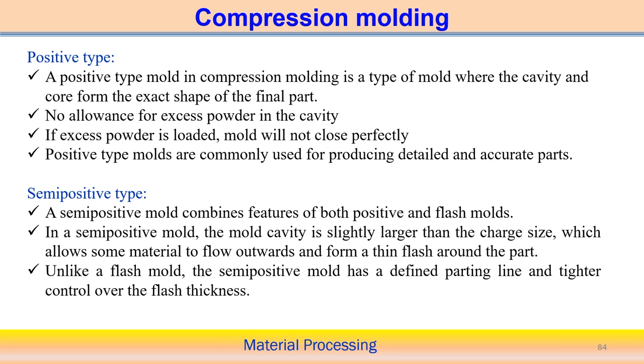In positive type compression molding, the upper half of the mold closes perfectly in contact with the lower part of the mold cavity, so no excess material comes out as flash. The positive type mold is used for producing detailed and very accurate parts precisely because flash formation is avoided in this process.